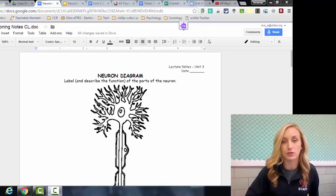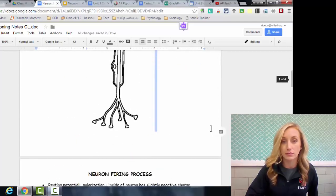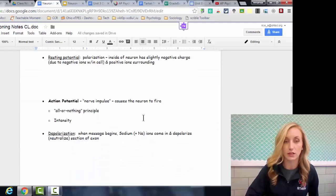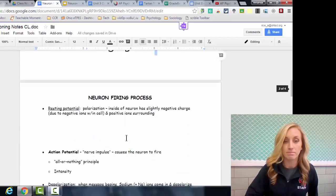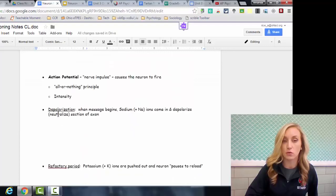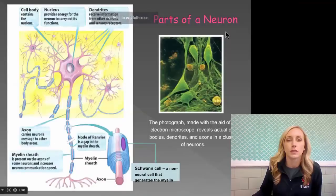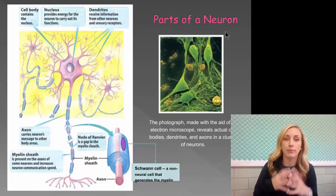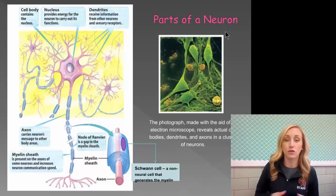I wanted to first start by showing you the set of notes that you should be working on. This is the piece of paper and it'll have some blocks out to the side to label the neuron. The neuron itself is the basis of our nervous system — it is the smallest, most basic unit of the nervous system and we're going to go over all of the parts.